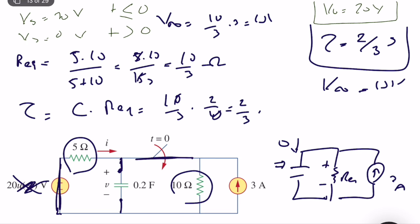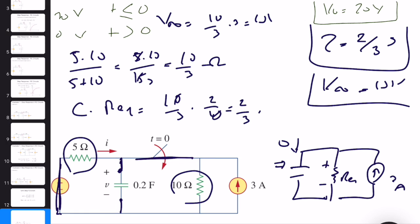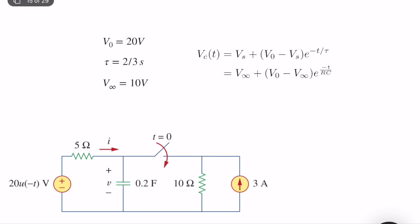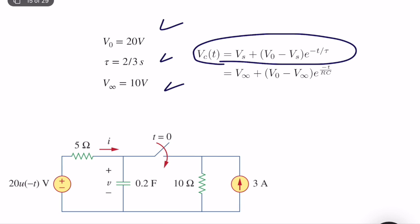V(∞) is equal to 10 volts. So to summarize: V(0) = 20 volts, V(∞) = 10 volts, and tau = 2/3 seconds. To get the closed-form expression for V_c(t), simply plug these values into the standard step-response formula.